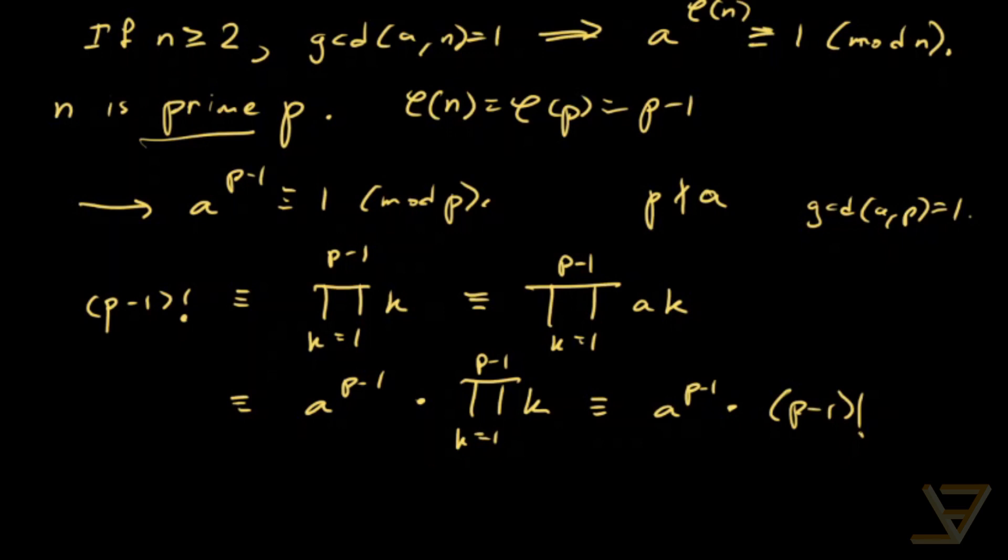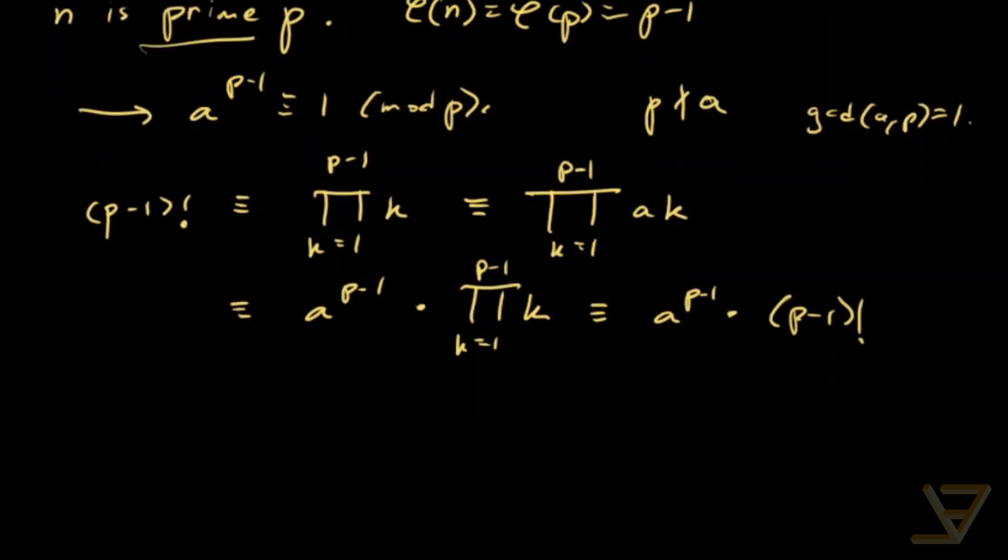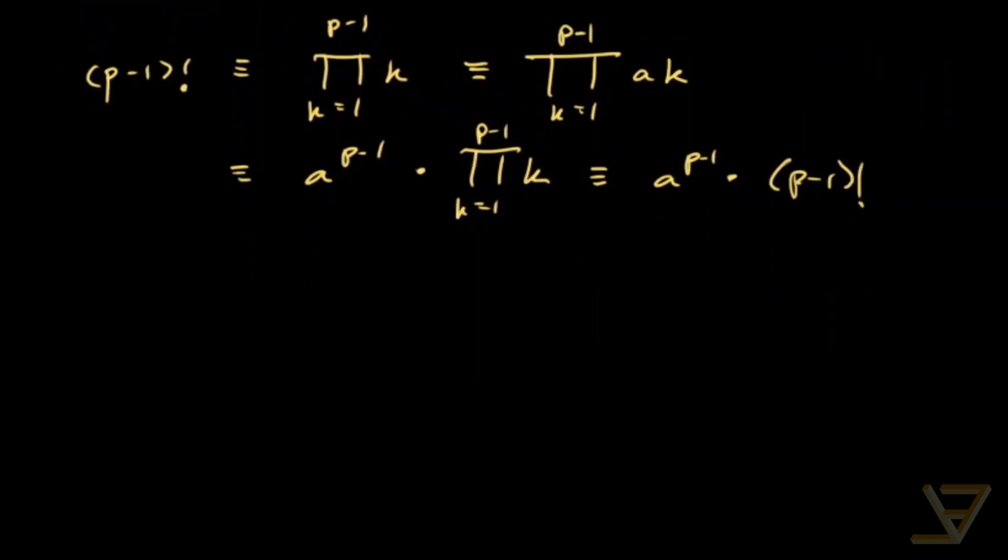So there are two ways we can do this. One is to simply cancel out p minus 1 factorial from both sides since p doesn't divide that product, so it's invertible. And we get a to the p minus 1 is congruent to 1 mod p.